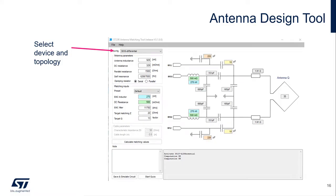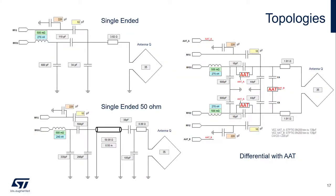Here's what the antenna design tool looks like. The first thing to do is select the device and the topology that will be used for the reader implementation. This covers both the ST25R3911B and the ST25R3916 families. Upon selecting the device and topology, the associated circuit diagram will appear in the tool. This includes single-ended with and without automatic antenna tuning, single-ended 50 ohm, and differential with and without AAT. Here we can see some of the associated topologies.